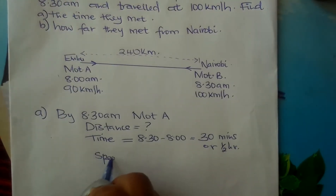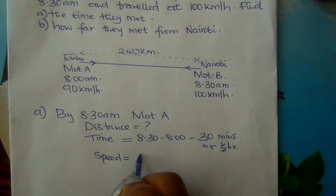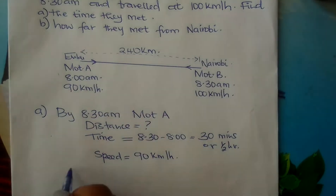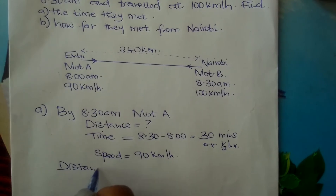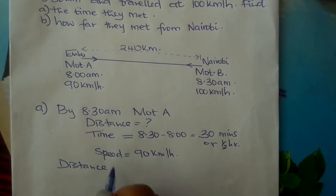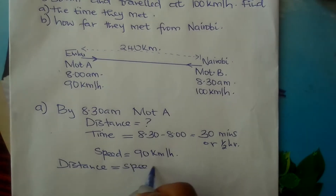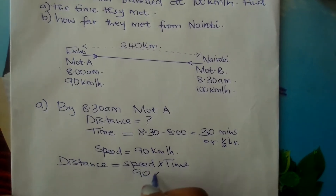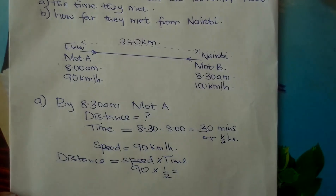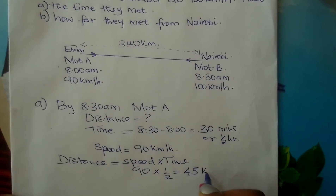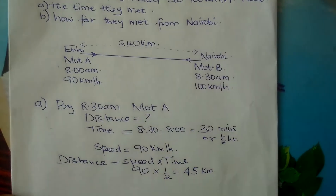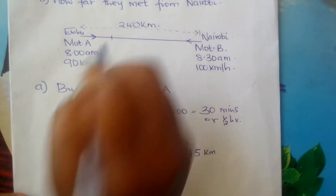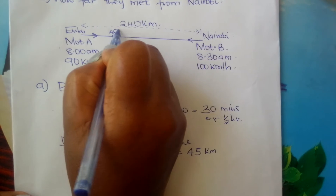Motorist A is travelling at 90 km per hour. What distance has he covered by 8:30 am? Distance equals speed times time, so that is 90 times one-half, which gives you 45 kilometres. By 8:30 am, motorist A will have covered 45 kilometres from Embu. Fix that on your diagram.